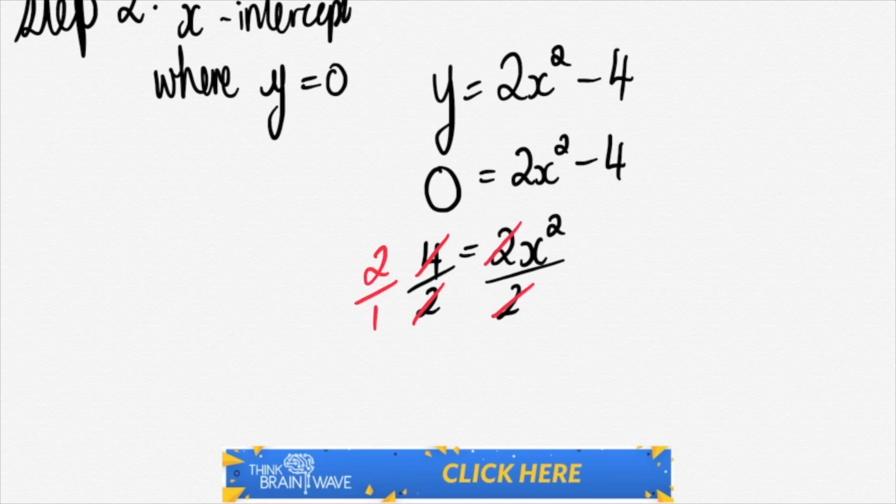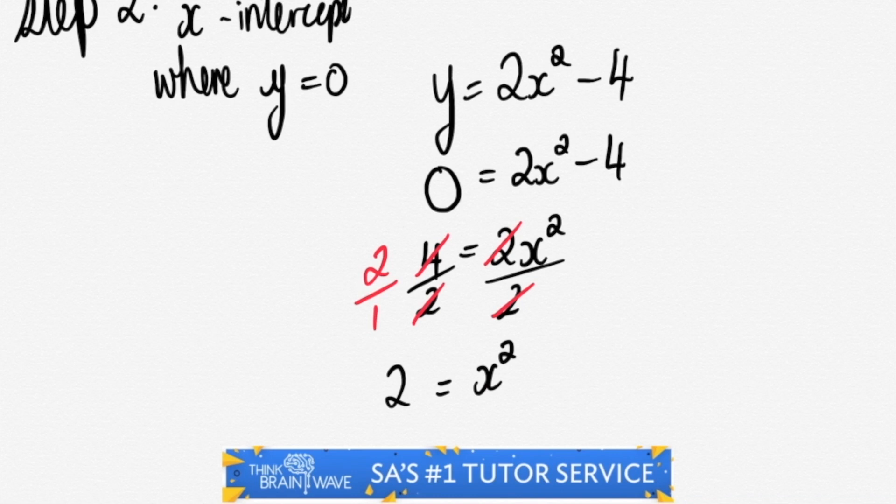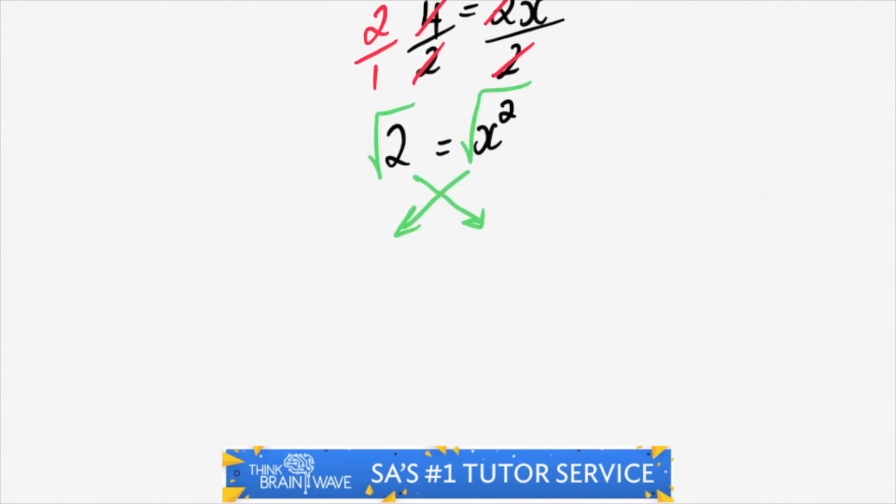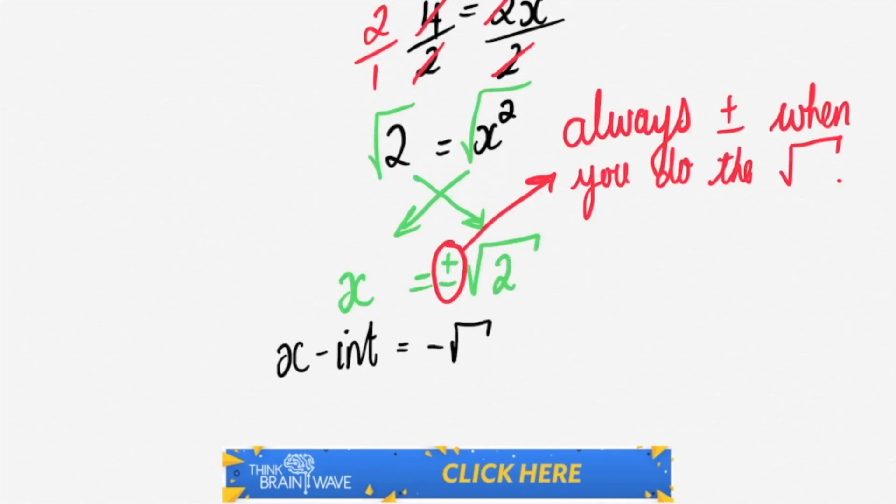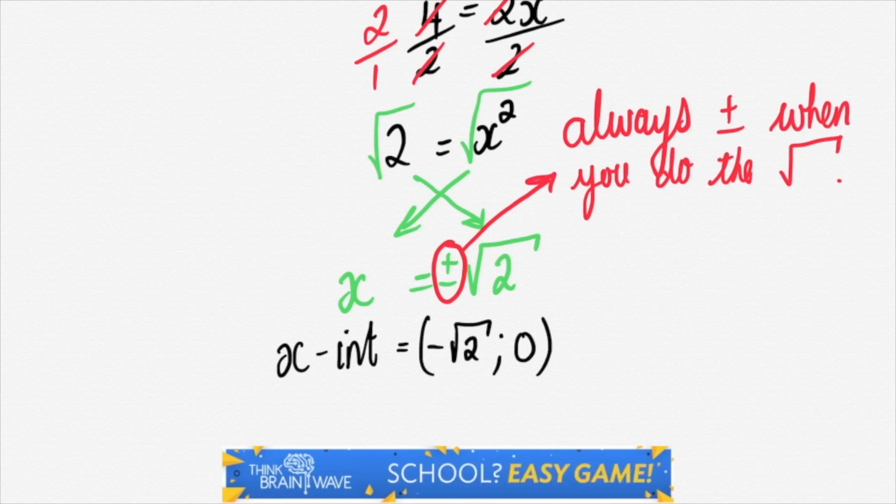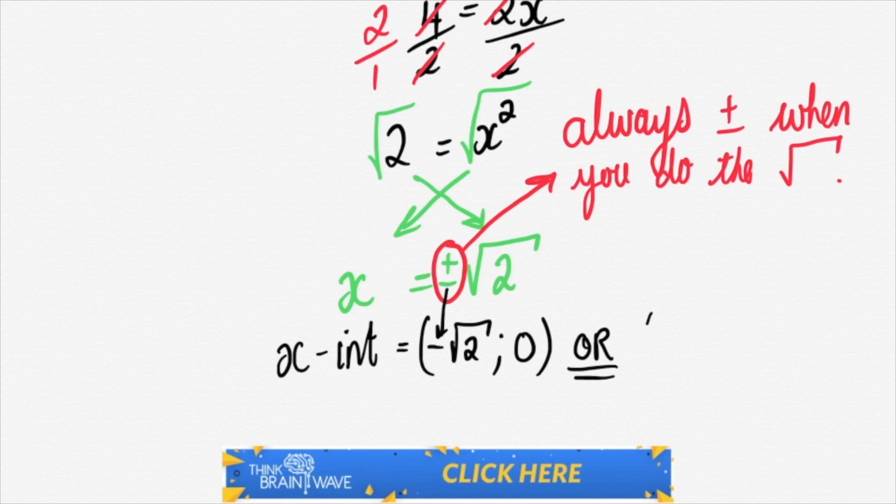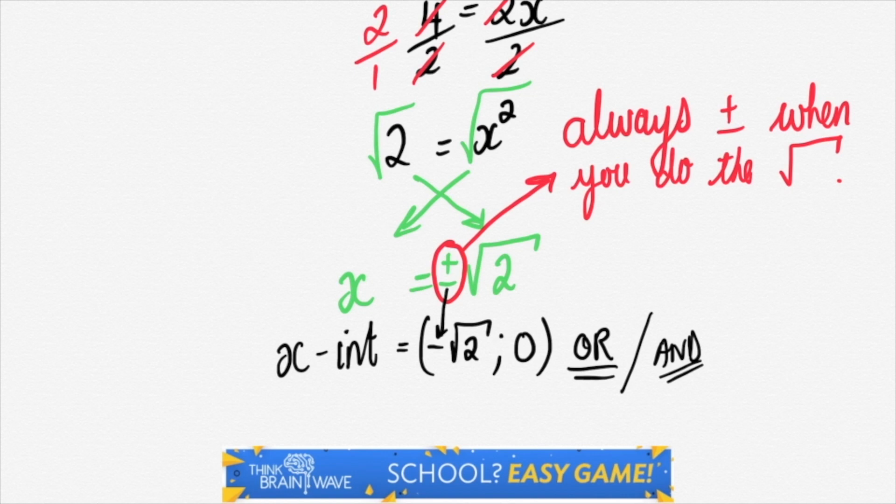And now we take the square root of 2 and the square root of x-squared. Now always remember when you take the square root of x-squared, the square root of the other side, in this case 2, will always be a plus or minus answer. It's never just a single positive or negative answer. We'll say x is equal to plus or minus the square root of 2. Minus square root of 2 and 0, and positive square root of 2 and 0. Two different answers. Which means that as you shift your parabola down along the y-axis, the two arms of the smiley face move through the x-axis cutting it at minus square root of 2 and at positive square root of 2.